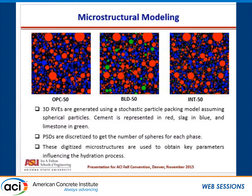Moving on to microstructural modeling, we developed 3D representative volume elements using a stochastic particle packing model. Here I have shown three different mixtures: one is the OPC and slag binary, where the red particles are C150 OPC particles, the blue are slag particles. In the blended 50% replacement, you have 50% C150 and then an optimized composition of limestones and slag — limestone is shown in green. And here you have the interground, which is the interground C595 coupled with slag.